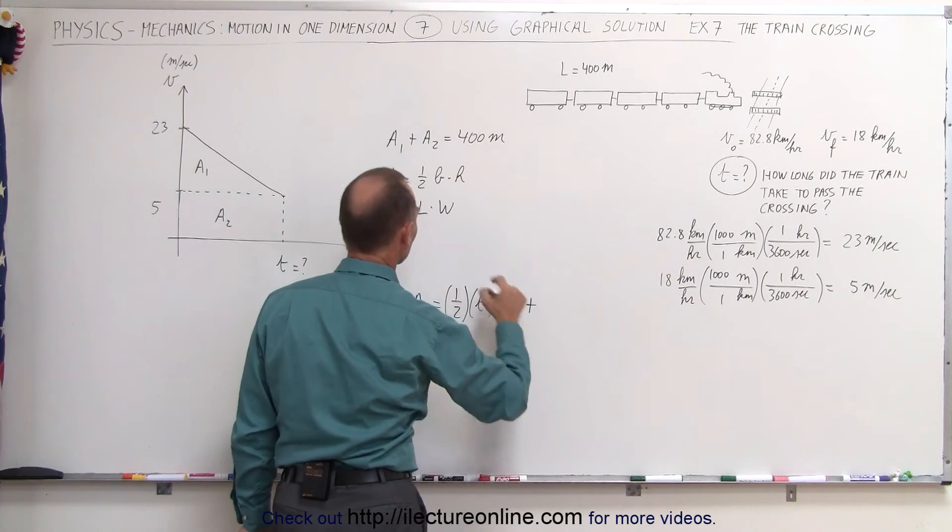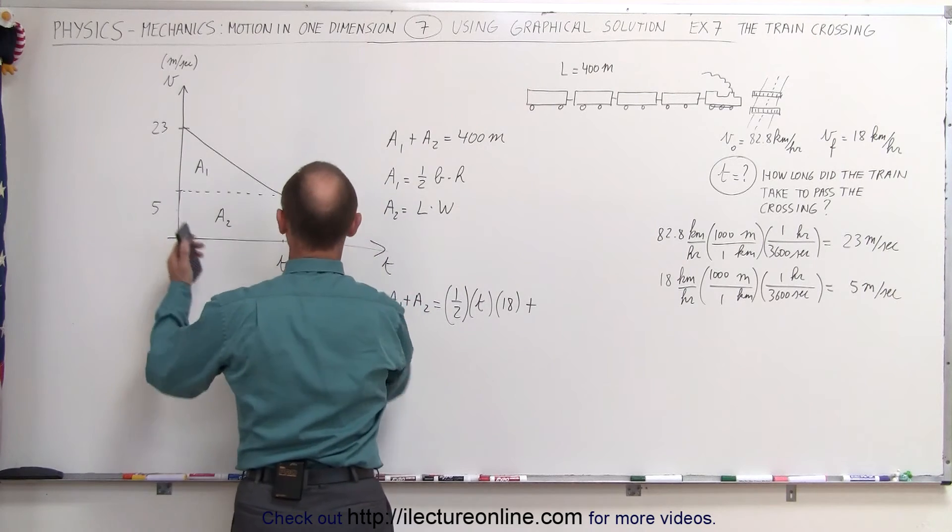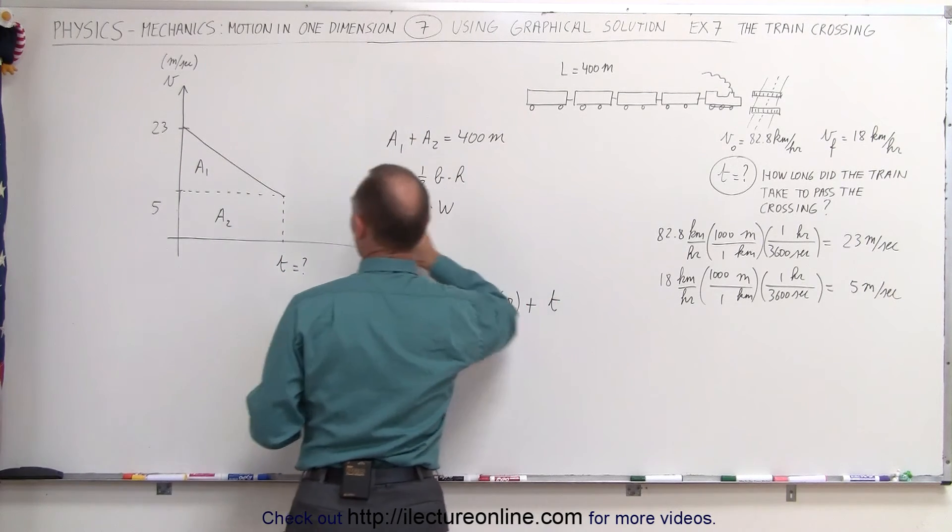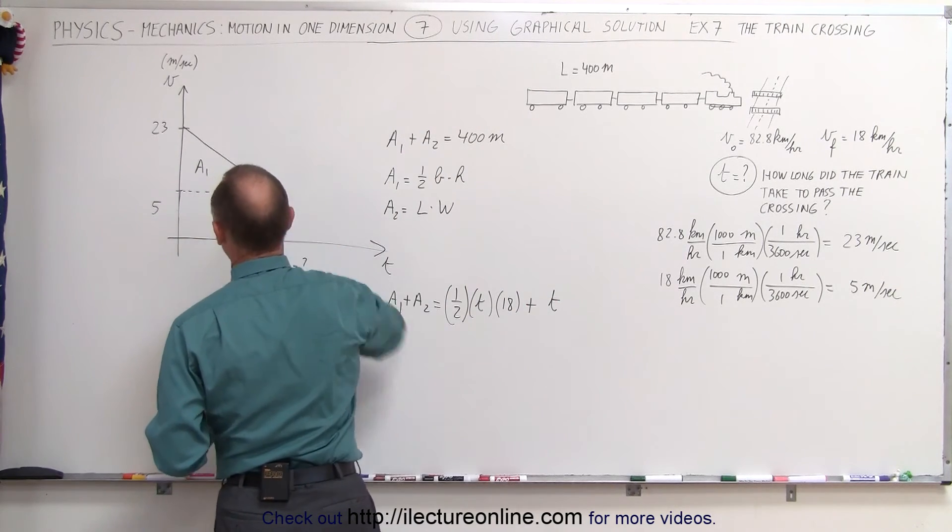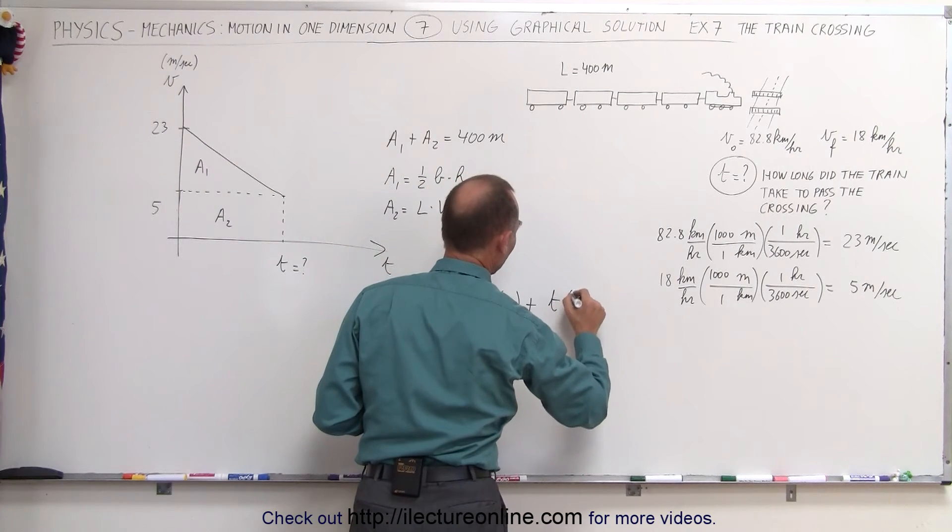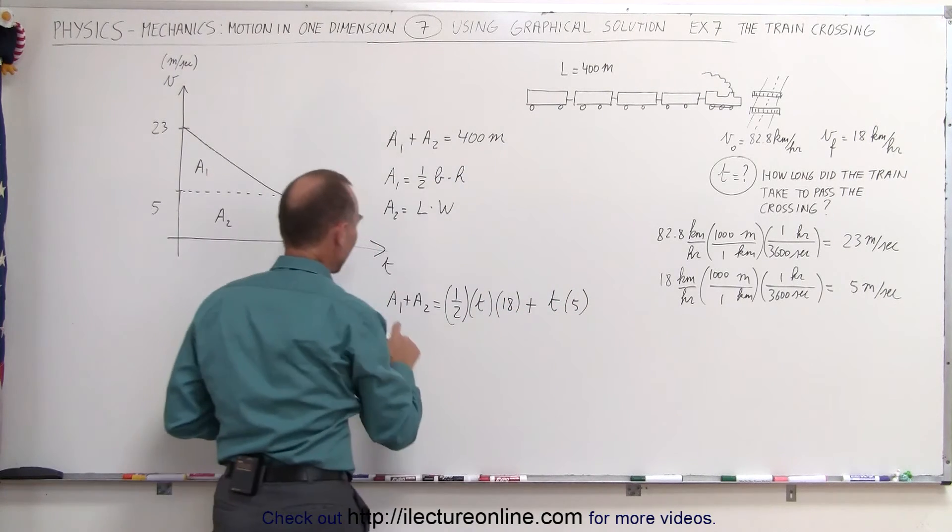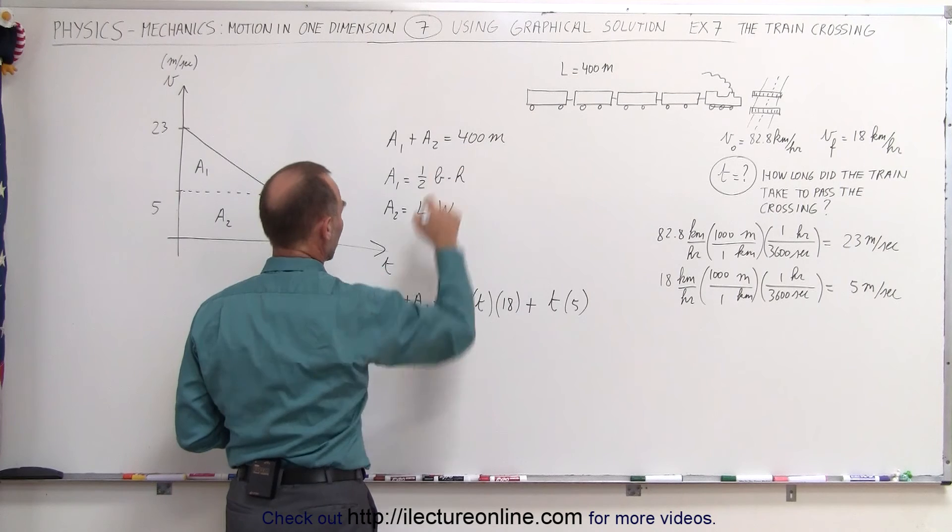And then we add to that the area of the second one, which is the length, that would be time, times the width, that would be the height of the rectangle, the width of the rectangle, which is 5.